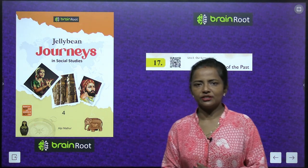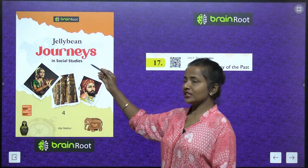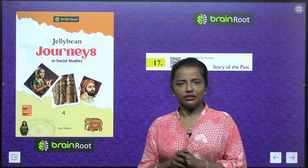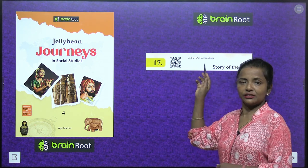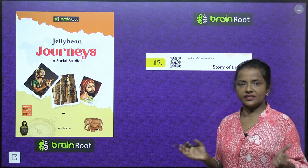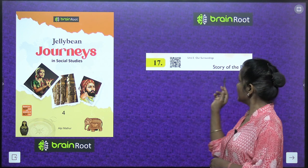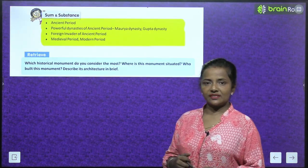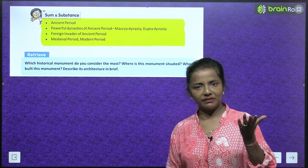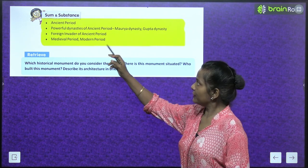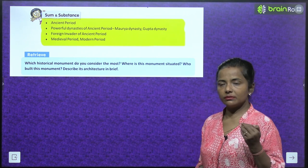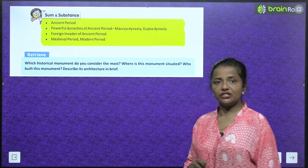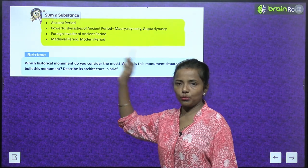Hello kids, let's start a new chapter of your book Jelly Bean Journeys in Social Studies Class 4th by Brain Root Series. This is your mentor Prajita with a new chapter for you today. We are starting Unit Number 5: Our Surroundings, and the chapter we are going to do is Chapter 17: Story of the Past. We will read about the ancient period — powerful dynasties, Maurya dynasty, Gupta dynasty, foreign invaders, and the medieval and modern periods.